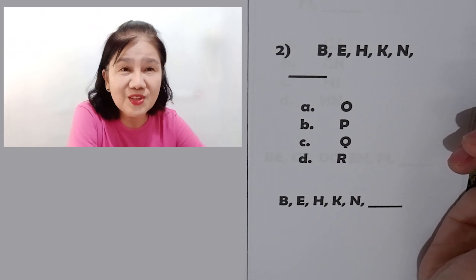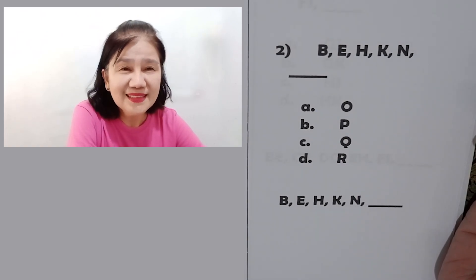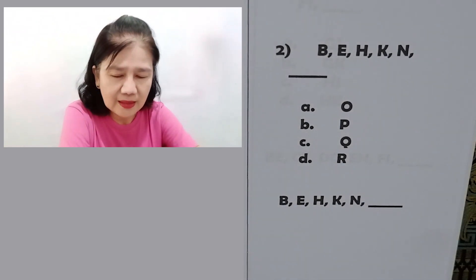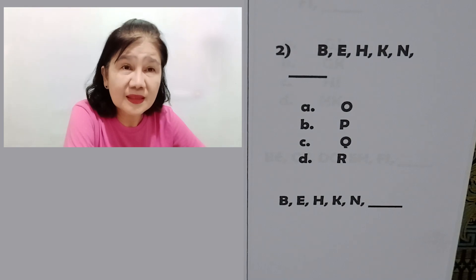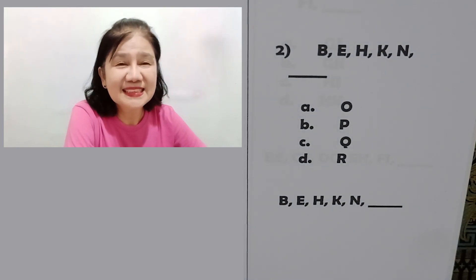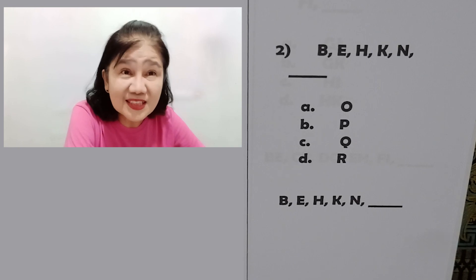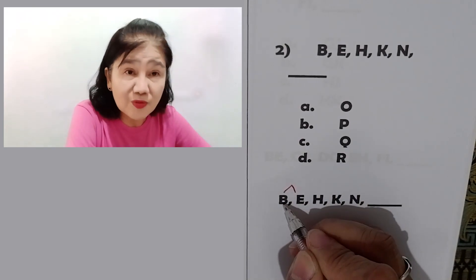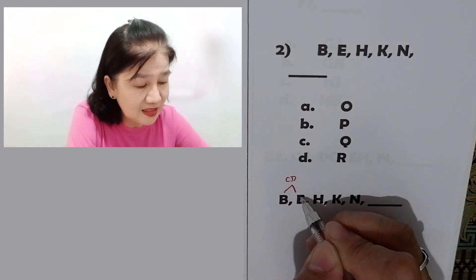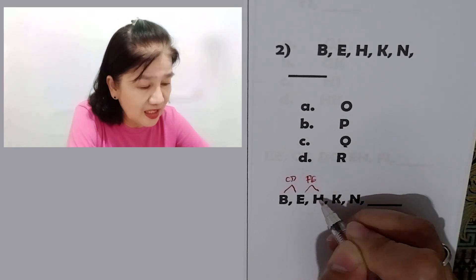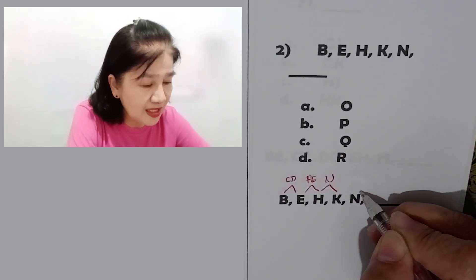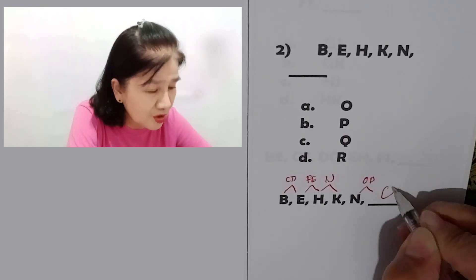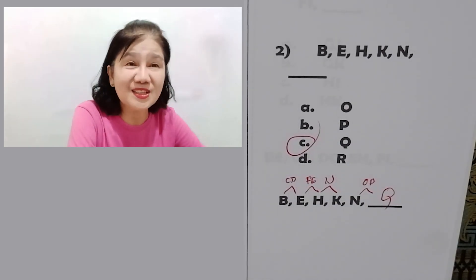Next, problem number two. I'm giving you seconds to solve problem number two. Go! Okay, let's start — you have an answer now. Try to see what the pattern is. B C D E, then E F, then F G H I J K. So N M N O P Q. So the answer is letter C: Q.